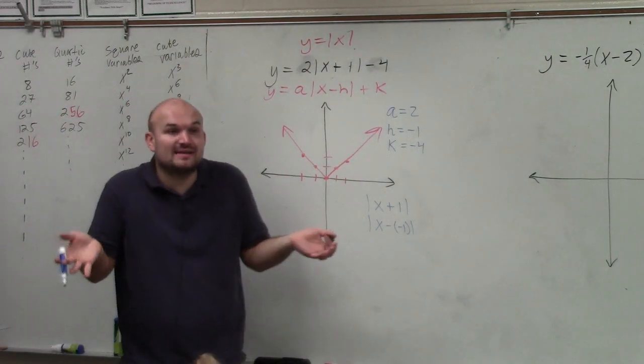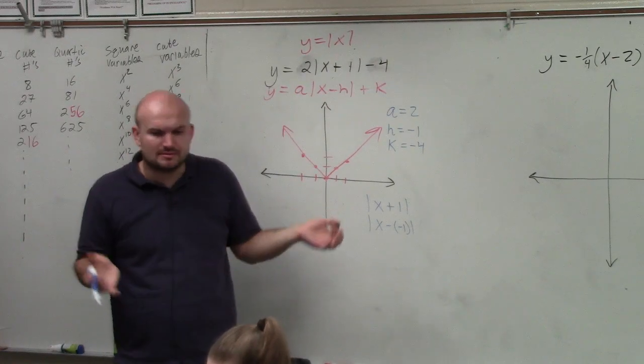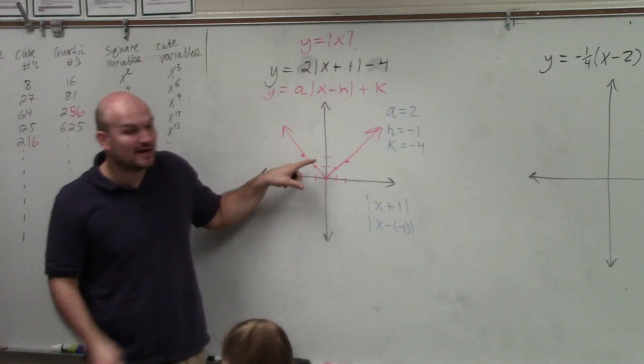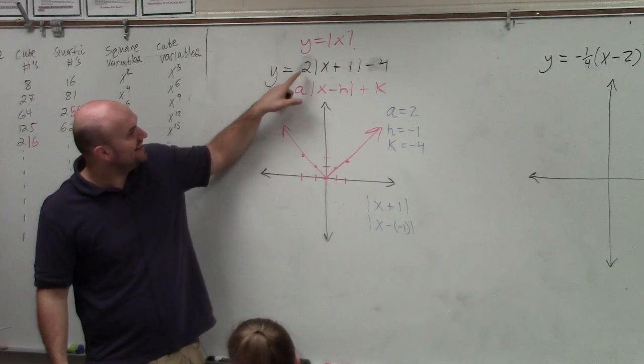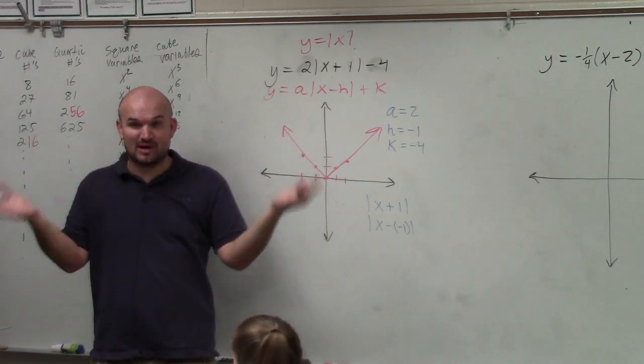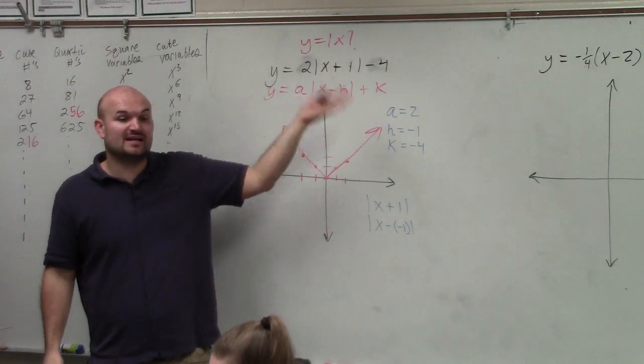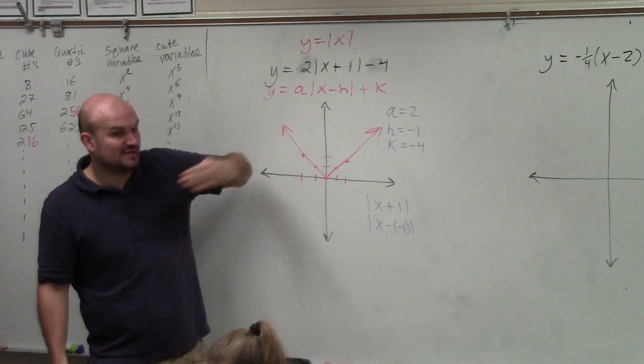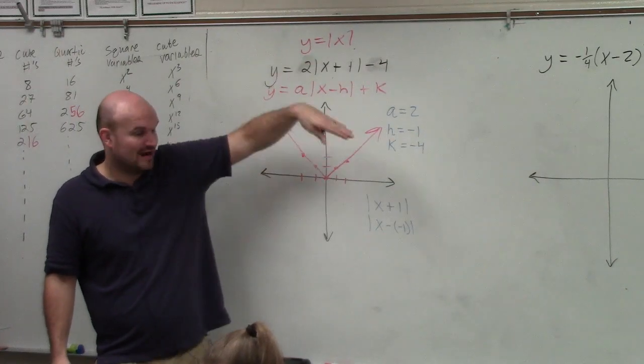Now, since we've identified them, what do all of them represent? A, remember, stretches or compresses your graph. And also, if it's negative, it reflects it. Then h, in this case, is going to be shifting graph left to right, and k shifts your graph up or down.